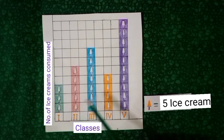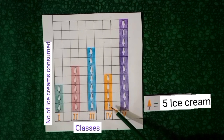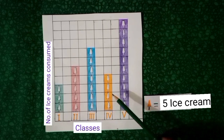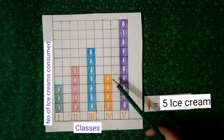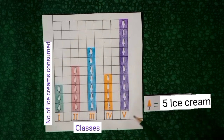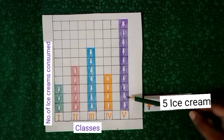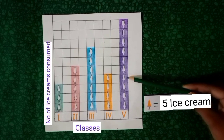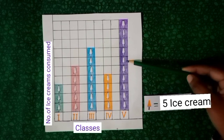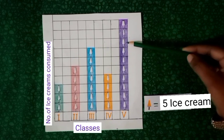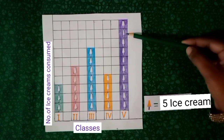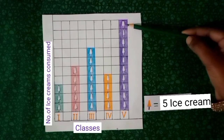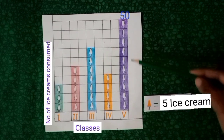Now let's see how many ice creams have been eaten by 4th class. Counting the symbols: 5, 10, 15, 20, 25, 30, 35, 40, 45, 50. So 5th class have eaten 50 ice creams.